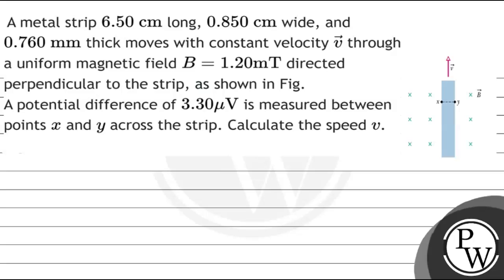The question says: a metal strip 6.50 cm long, 0.850 cm wide, and 0.760 mm thick moves with constant velocity V through a uniform magnetic field B equal to 1.20 milli-tesla directed perpendicular to the strip, as shown in the figure. A potential difference of 3.30 µV is measured between point X and Y across the strip. Calculate the speed V.